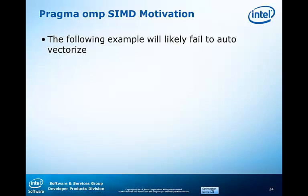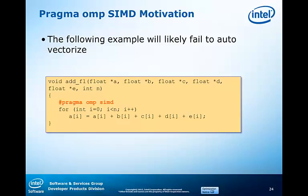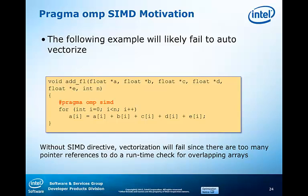At a high level, the following loop is one kind of example that could be vectorized with SIMD that might not be vectorized with auto-parallelization. This is a loop which cannot be auto-vectorized by the compiler in the absence of any pragmas or clauses, just by using runtime overlap checks inserted into the compiler. Without the SIMD directive, vectorization may fail since there may be too many pointer references to do a runtime check for overlapping array accesses.